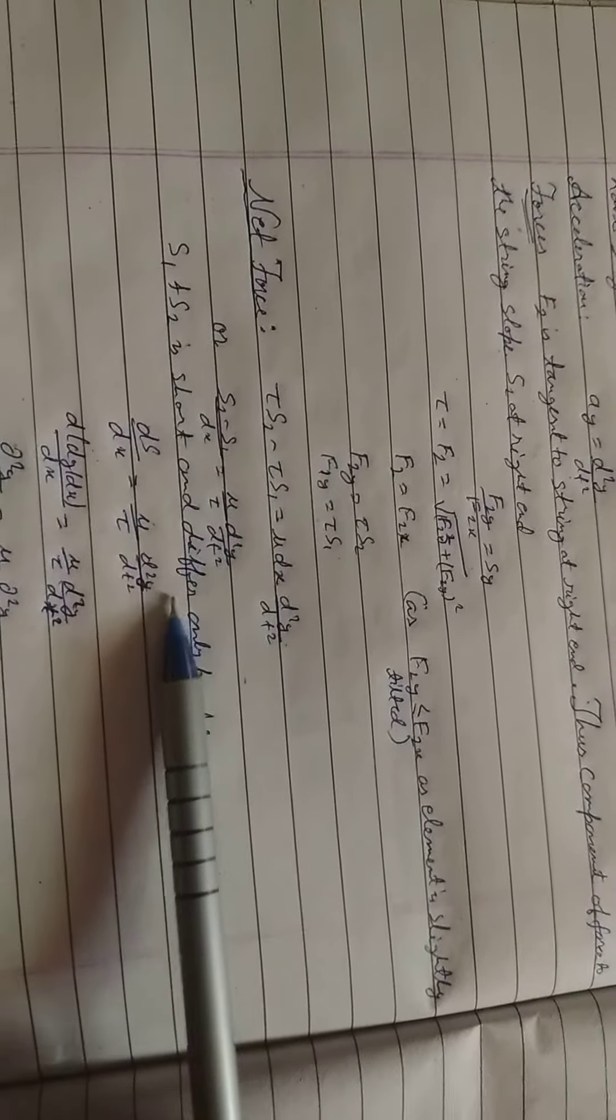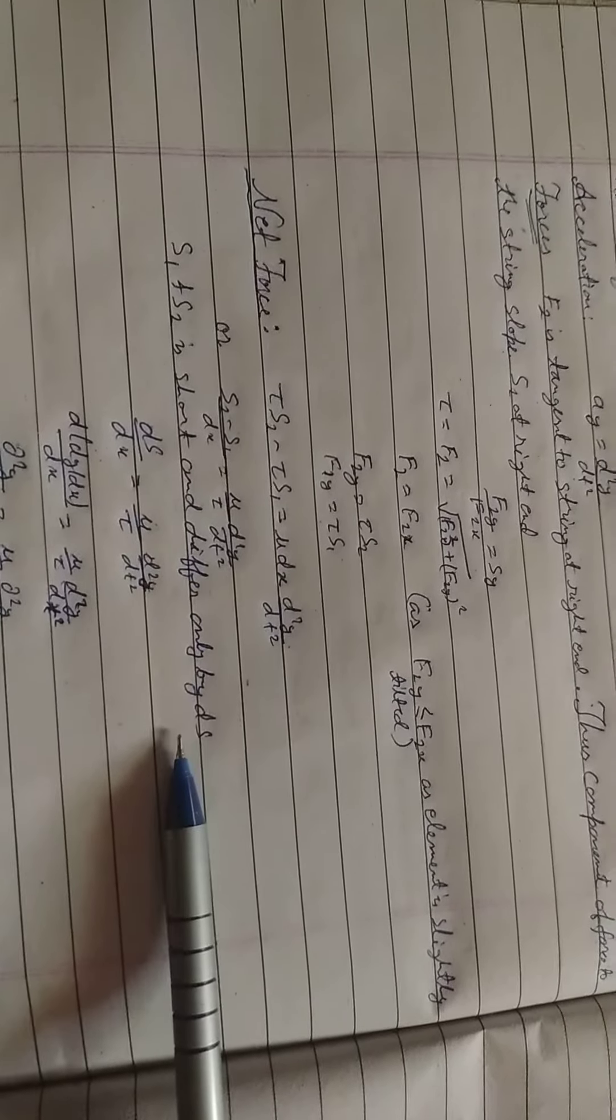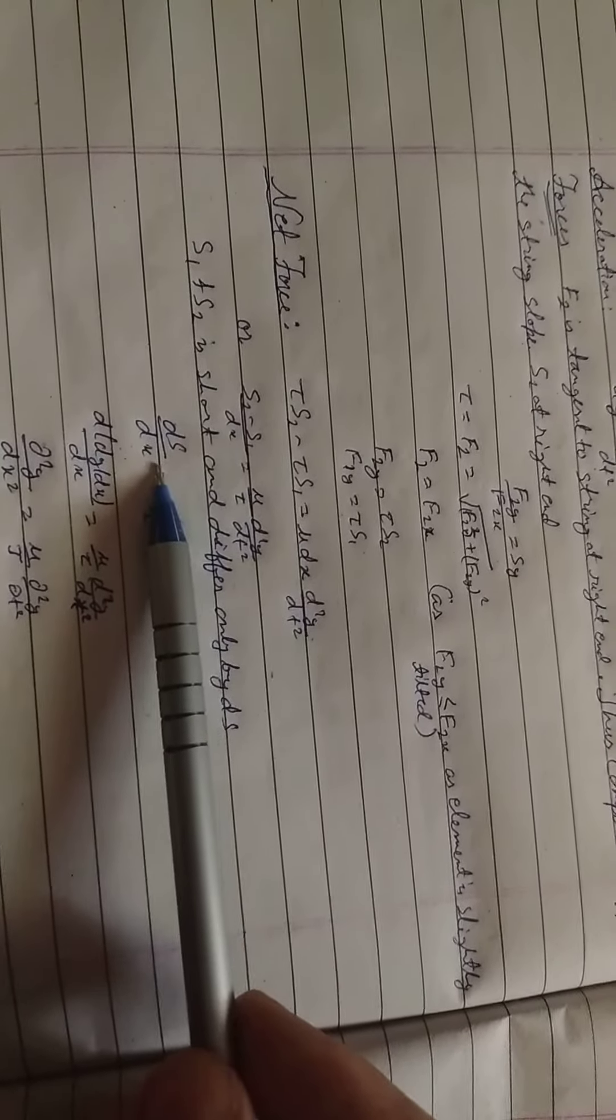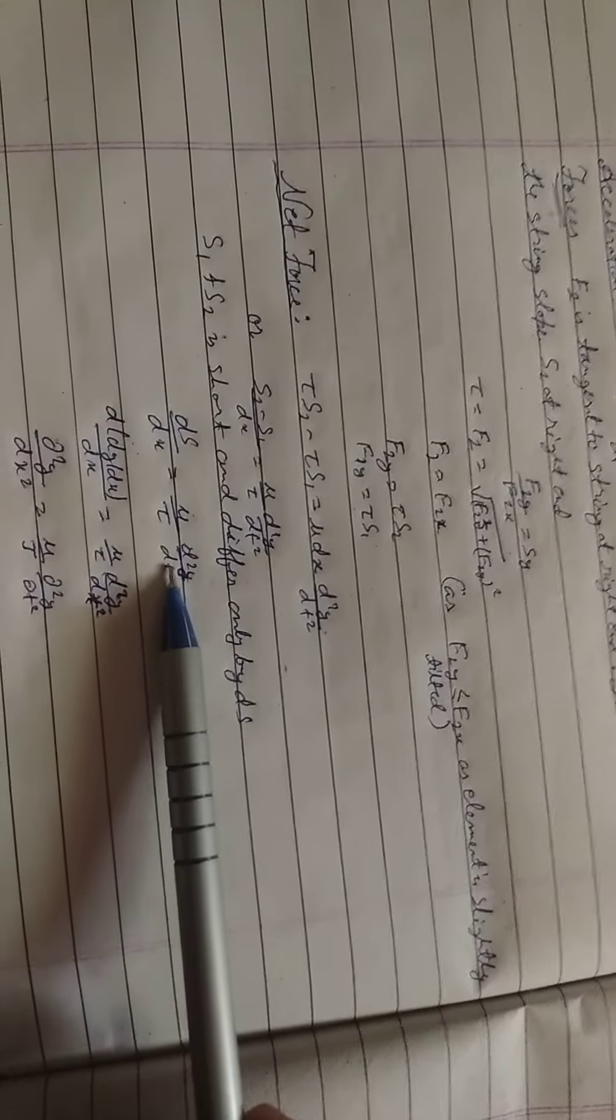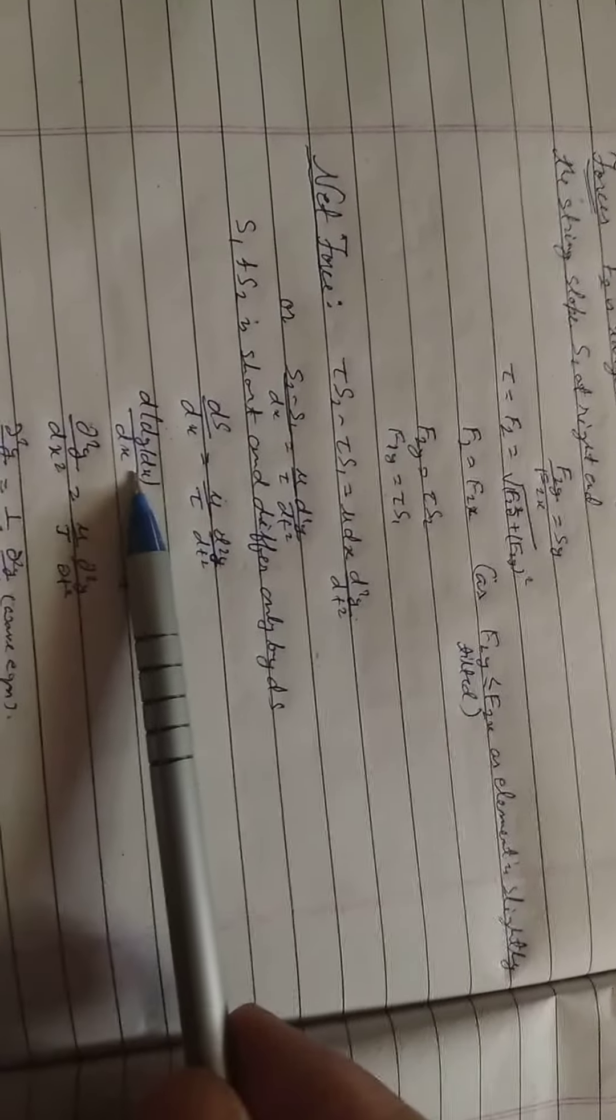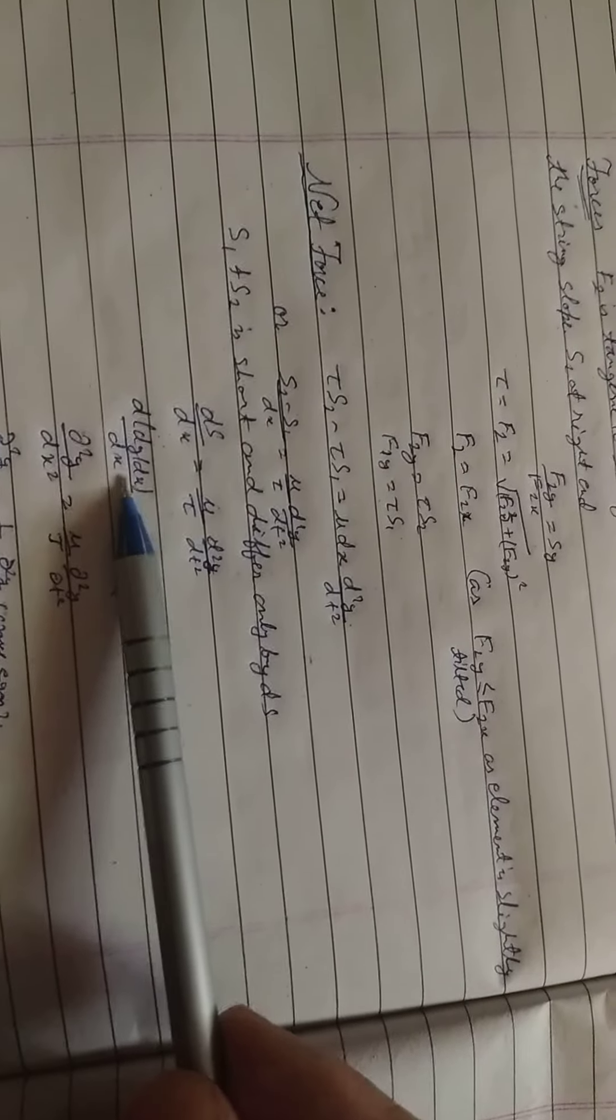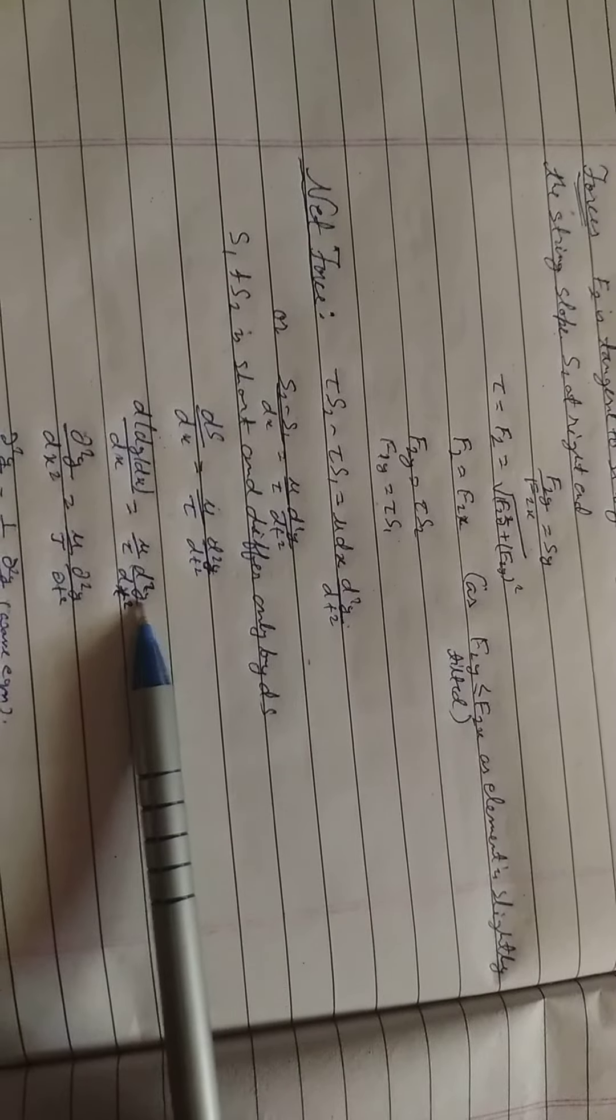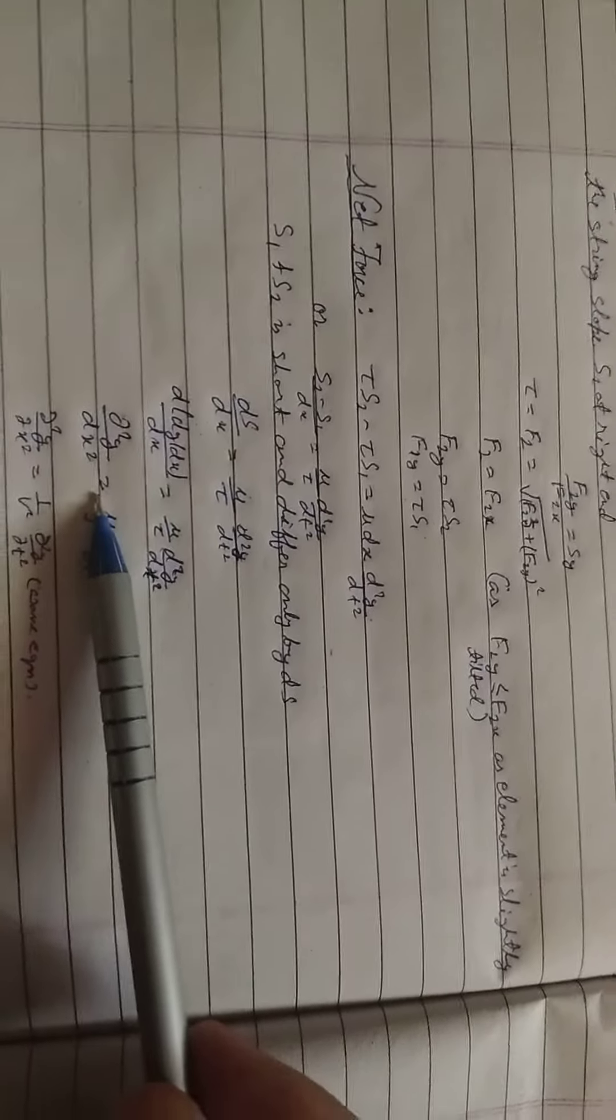s1 and s2 differ only by ds. Therefore, s2 minus s1 is equal to ds by dx. The whole equation is ds by dx is equal to mu by tau d square y by dt square. This gives d of dy by dx by dx equals mu over tau d square y by dt square, which simplifies to d square y by dx square equals mu over tau d square y by dt square.